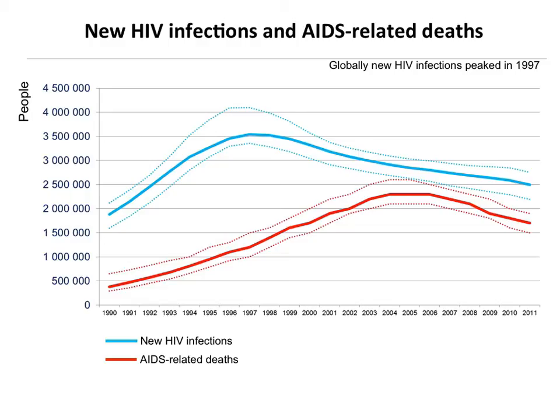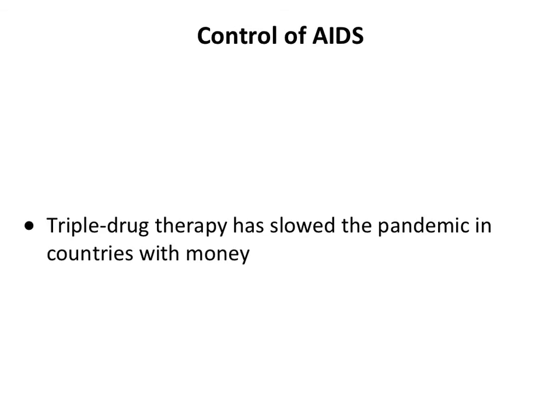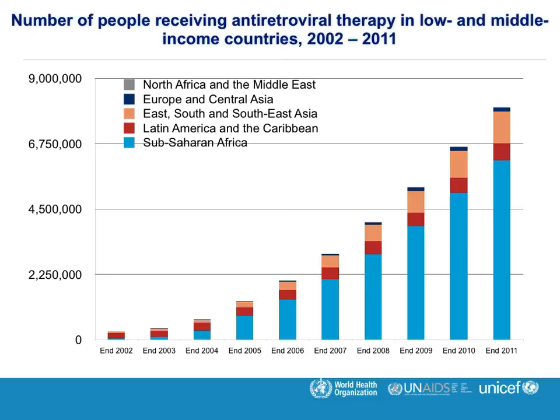New HIV infections globally peaked in 1997 at about 3.5 million, and AIDS-related deaths peaked a few years later; both are slowly going down as people modify their behavior. This is a sexually transmitted infection also transmitted at birth and by intravenous drug use. We now have over 25 antiretrovirals. Triple therapy - three drugs at once - reduces the number of mutations causing drug failure, slowing the pandemic in countries with money. These drugs are just getting into poorer countries.